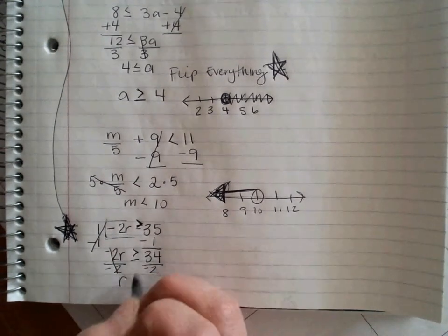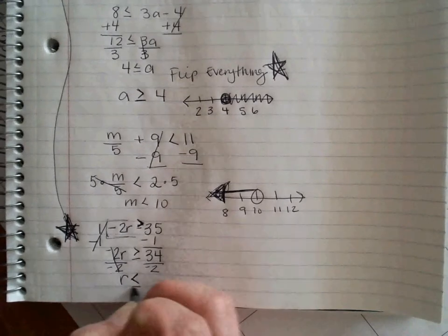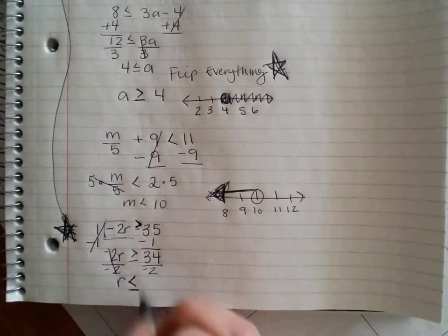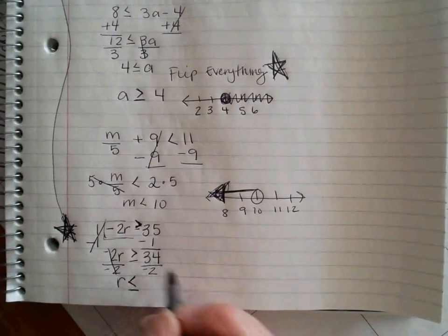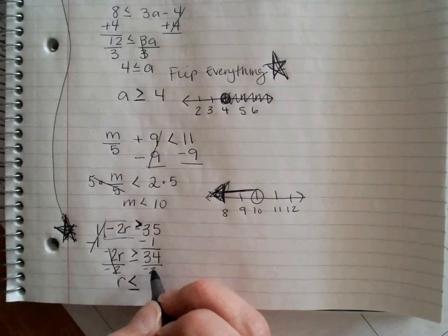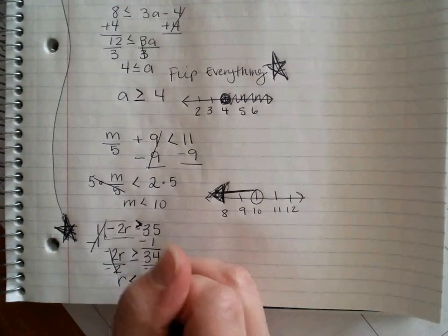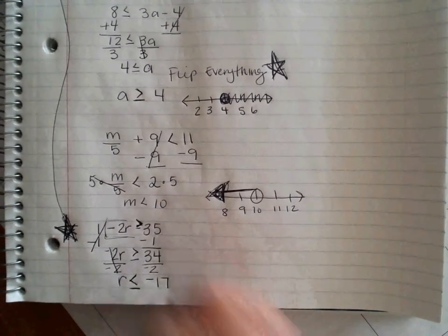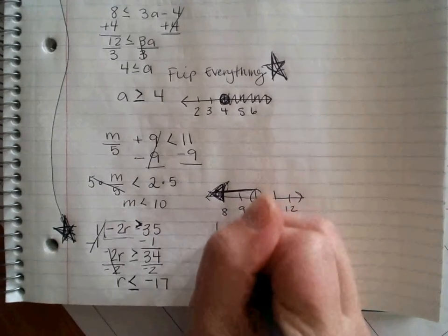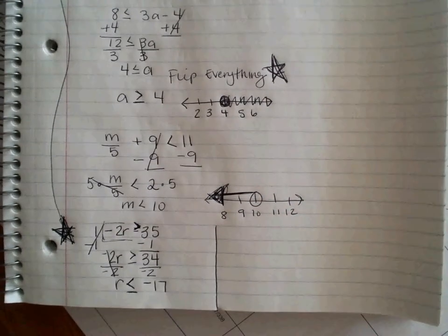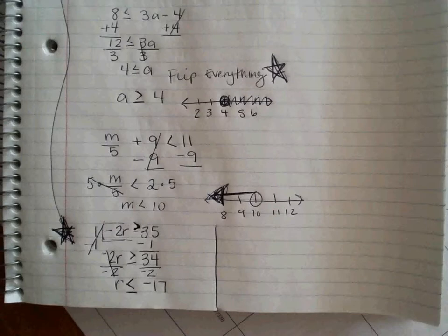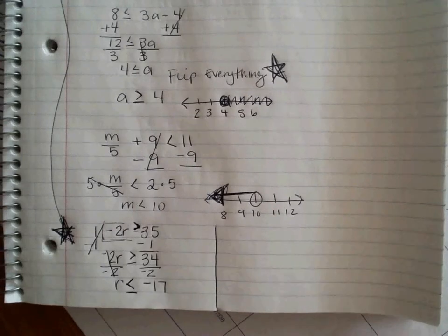So, it cancels out here. R is going to now be less than or equal to. I have to flip this because I brought a negative over. Therefore, 34 divided by negative 2 makes negative 17. It's going to be a closed circle over negative 17 going to the left.